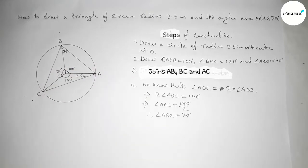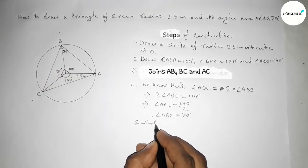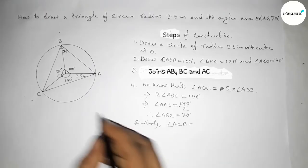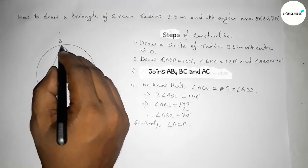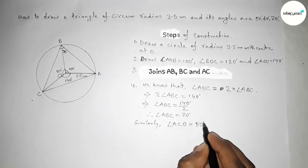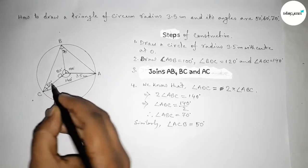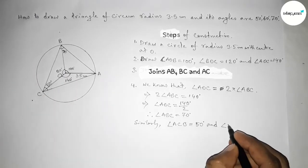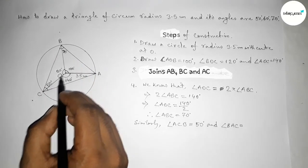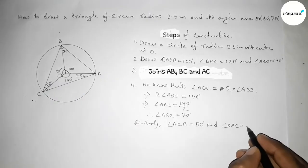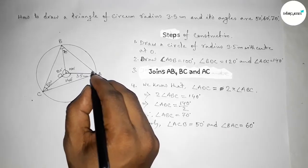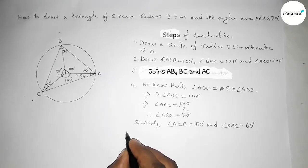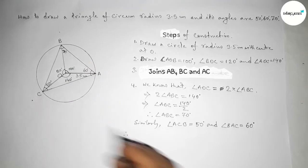Similarly, angle BAC equals half of 120 degrees — that is 120 divided by 2 — which is obviously 60 degrees. So this angle equals 60 degrees. Therefore we get a triangle with three angles: 60 degrees, 50 degrees, and 70 degrees.